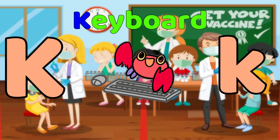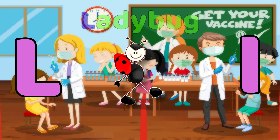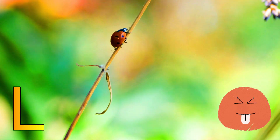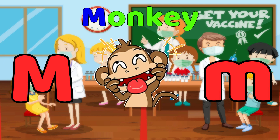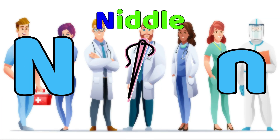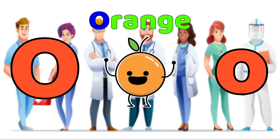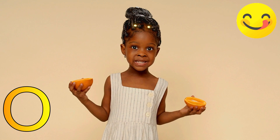K, Keyboard. L is for Ladybug. Ladybug, Ladybug, L, Ladybug. M is for Monkey. Monkey, Monkey. N is for Needle. Needle, Needle, N, Needle. O is for Orange. O, O, Orange. O, Orange.